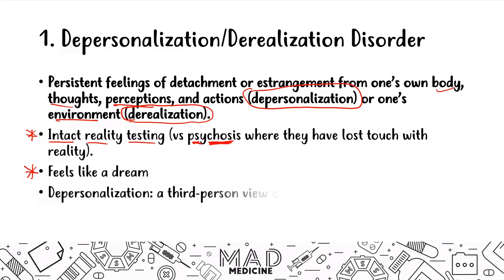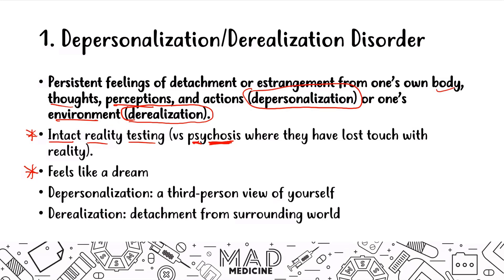When it comes to the depersonalization portion, patients will say they have a third-person view of themselves. For the derealization portion, patients feel detached from the surrounding world. A good example is someone who went through a traumatic sexual assault who tells you they saw things in a third-person point of view — like they were in the room looking at themselves. During treatment, you may notice the patient seems numb, not really responsive, not completely there — that's the derealization, where they've detached from what's happening.